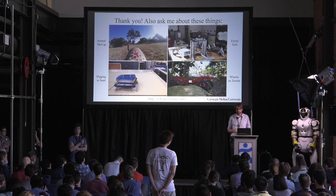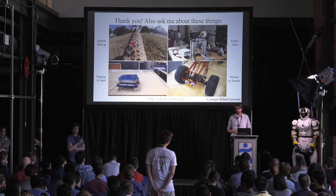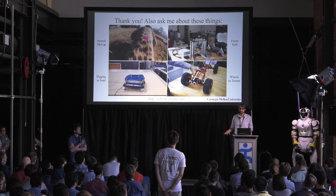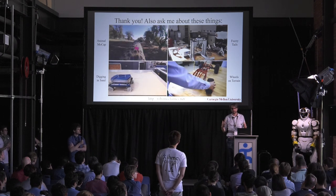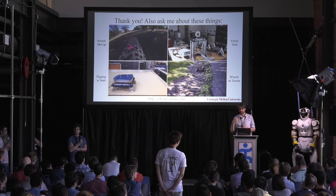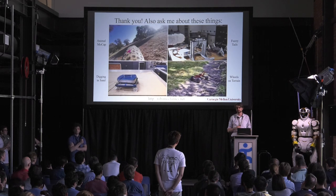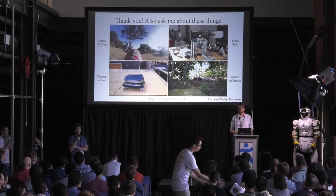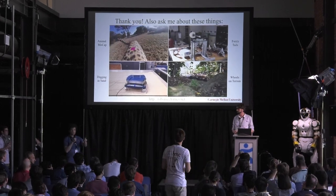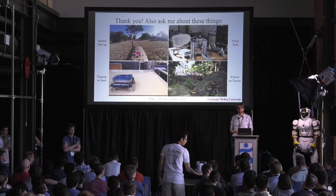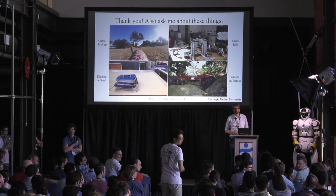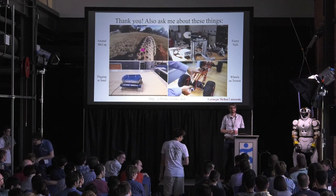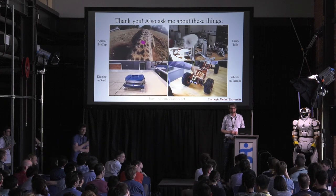The tail is one option for applying control authority when your foot slips. If you find the worst possible foothold spot, you need some way to still control the robot.